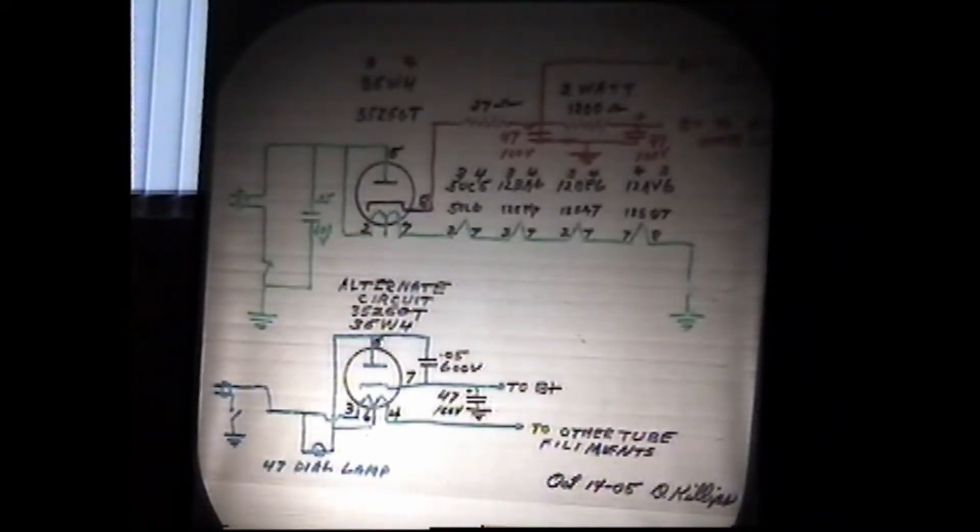So the boss said look in the back—I was just a kid then—and he said look in the back and see if the tubes are out. So I looked in the back, it had three metal tubes just like here, and a 50L6 and a 35Z5. I said you can't tell about the metal tubes, but the glass ones are still lit. He said well then it can't be a tube, it must be something else going wrong.